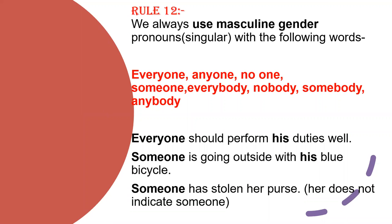Rule number 12: Words like everyone, anyone, no one, someone, everybody — we don't know their gender, so we always use masculine gender pronouns. We live in a male-dominating, patriarchal society, so when we don't know the gender, we mostly use masculine gender. So for everyone, anyone, no one — you always use masculine gender pronouns.